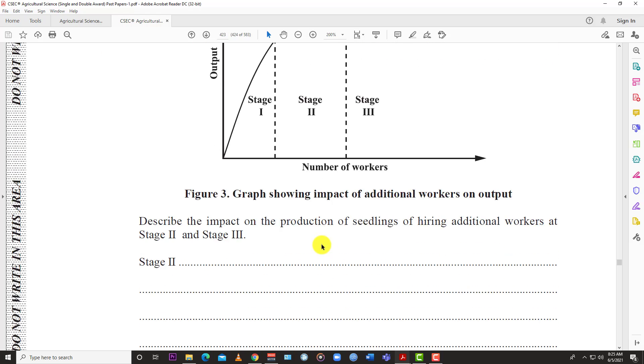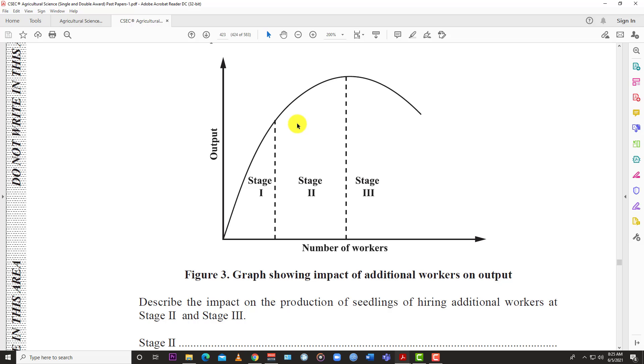You keep adding workers, output goes up, goes up, goes up, then it tapers off and then it starts going down even if you're adding more workers. At stage two, if you add additional workers your output is still increasing, but it's increasing at a slower rate than it was at stage one. Stage one shoots up as you add more workers but then it starts bending to become a little flatter. But at stage two you're still increasing output as you add more workers. By stage three you start experiencing diminishing returns.